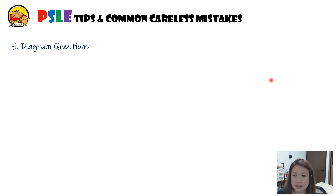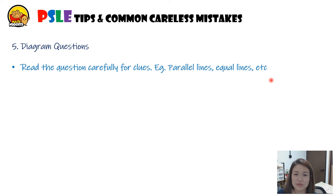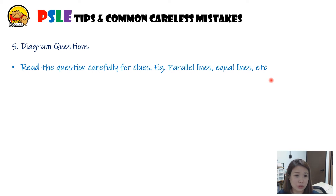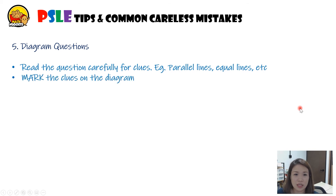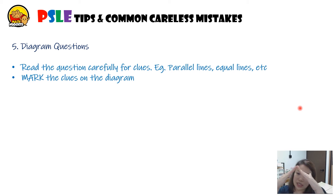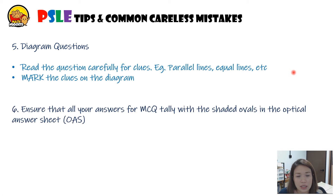Number five: diagram questions. It's very common to look straight at the diagram and forget to read the top of the question where clues are given. Read the question carefully for clues — they will tell you which are the parallel lines and which are equal lines. Then mark those clues in the diagram: parallel lines get arrows, and equal lines get square indicators to show they are the same.